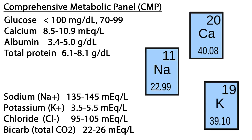Chloride moves in and out of the cells to help maintain acid-base balance; normal range is 95 to 105 milliequivalents per liter. Bicarbonate, or total CO2, is released and reabsorbed by the kidneys and helps maintain a stable pH level; normal range is 22 to 26 milliequivalents per liter.